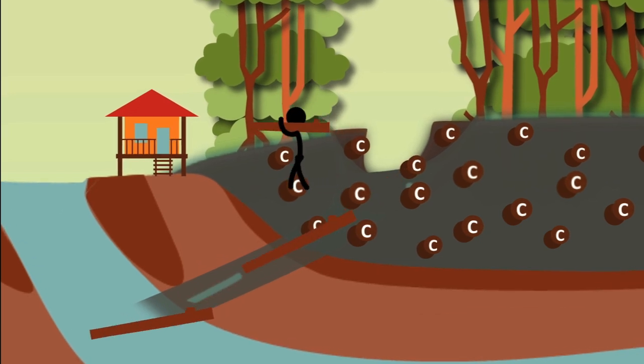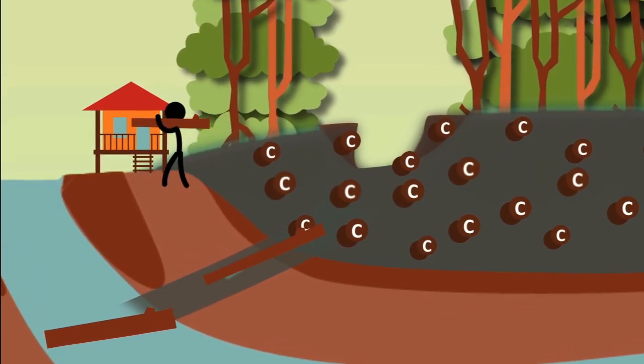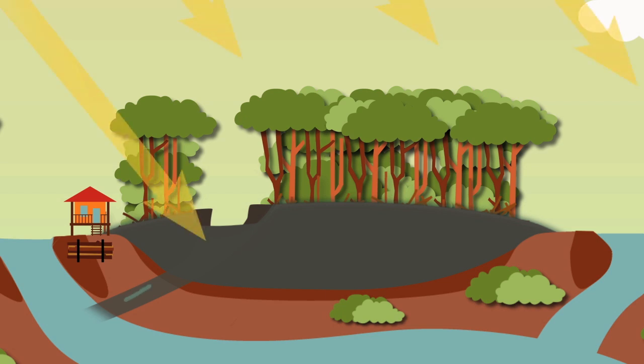Water that was previously stored in the peat starts to flow out the ditch. For the first time, large amounts of sunlight enter the forest. The temperature goes up.